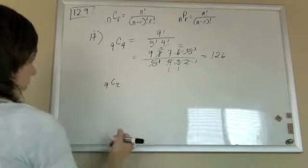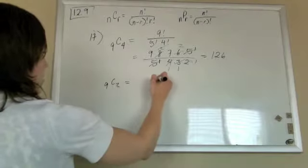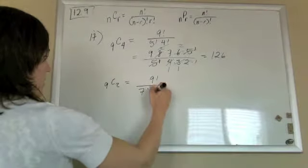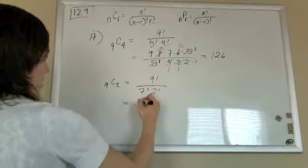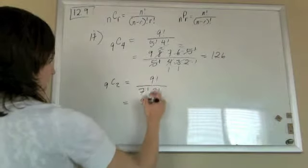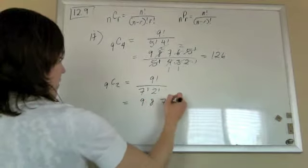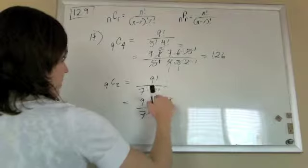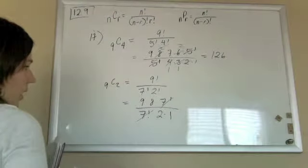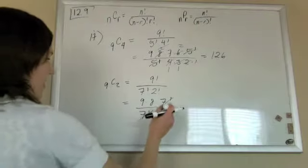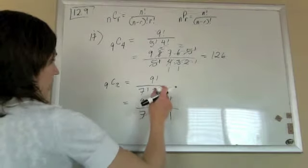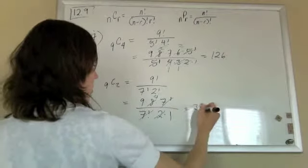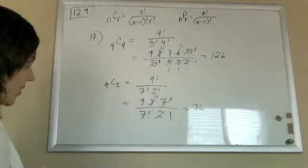And then they have us do 9C2. So plugging in, we have 9 factorial, 9 minus 2 is 7 factorial times an extra 2 factorial. So 9 factorial is 9 times 8. I'm going to let the 7 factorial cancel with the 7 factorial on the bottom. But I still have a 2 factorial, so that's 2 times 1. And I'll cancel 2. So 8 divided by 2 is 4. And that will leave me with 36.